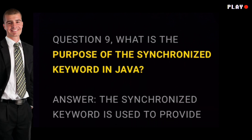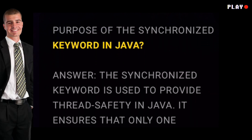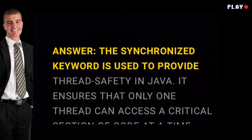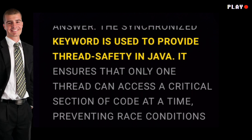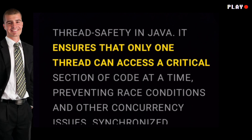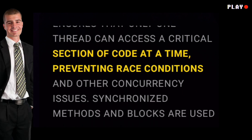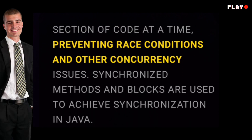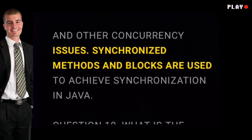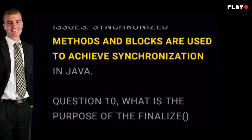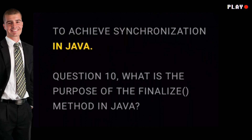Question nine: what is the purpose of the synchronized keyword in Java? Answer: the synchronized keyword is used to provide thread safety in Java. It ensures that only one thread can access a critical section of code at a time, preventing race conditions and other concurrency issues. Synchronized methods and blocks are used to achieve synchronization in Java.